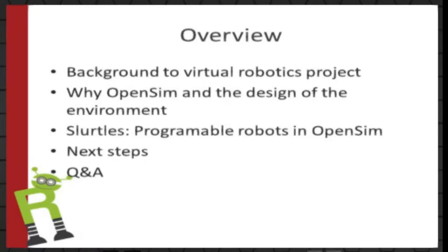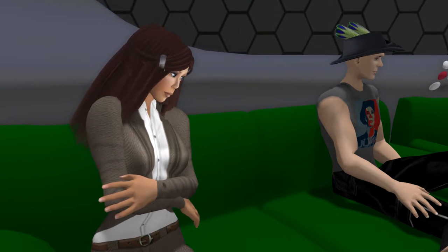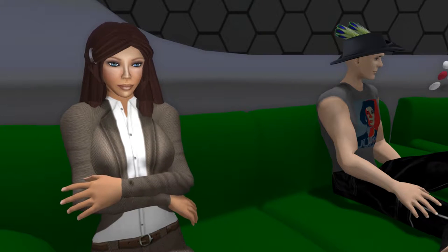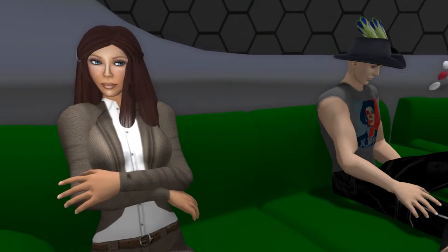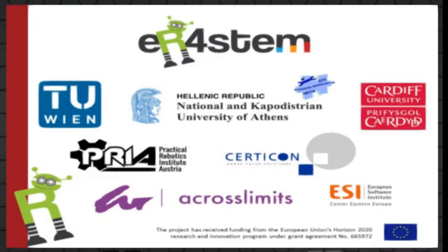Myself and John will talk about why we're using OpenSim for this project and the design of the environment. I'll then talk about slurtles and we'll have a demonstration of them in action, followed by next steps and Q&A. The robotics project is funded by the European Commission and called ER4STEM — Educational Robotics for STEM. It's a collaboration between seven institutions in Europe, led by the Technical University of Vienna, with partners at the University of Athens, Cardiff University, the Practical Robotics Institute of Austria, Certicon, Across Limits, and the European Software Institute.